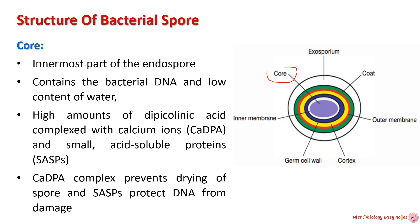Structure of the spore — the first part is the core. The core is the innermost part of the endospore and contains the bacterial DNA and a low content of water, therefore it is highly condensed. It is metabolically inactive, meaning biological activities are either slowed down or stopped. The core also contains a high amount of dipicolinic acid (DPA) complexed with calcium ions. This complex binds free water molecules, which prevents spores from drying and extreme temperature. The core also has small acid-soluble proteins that protect the DNA from damage.